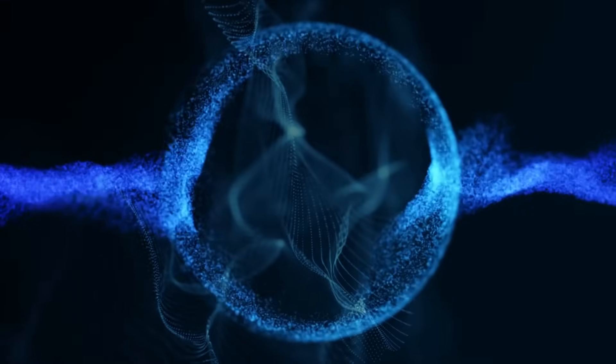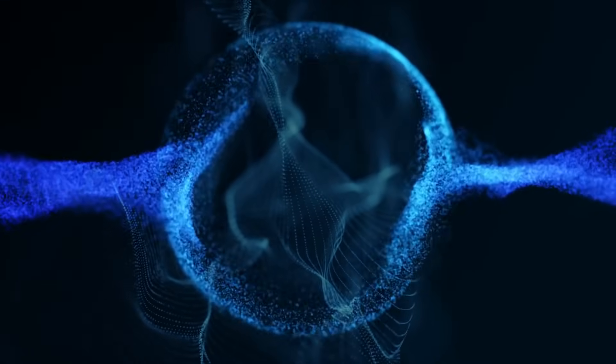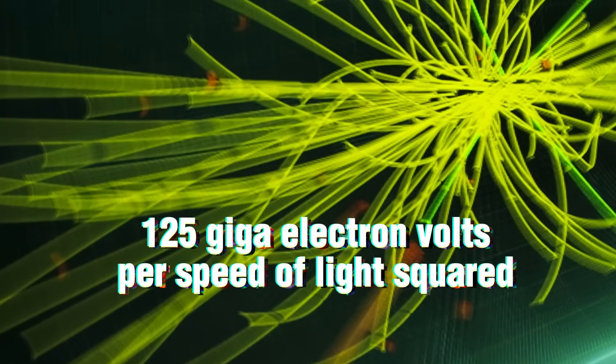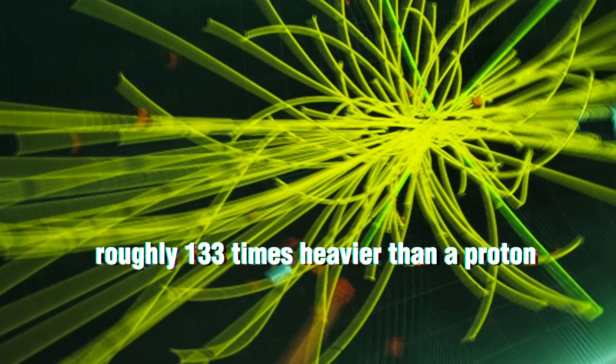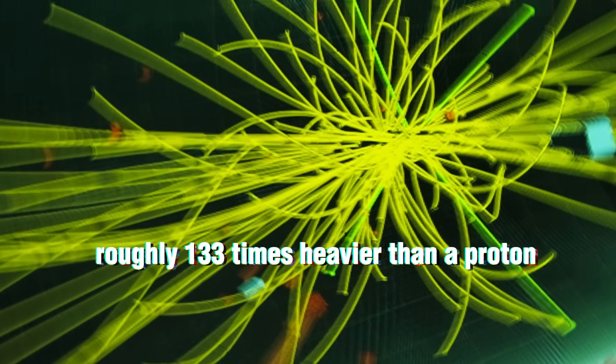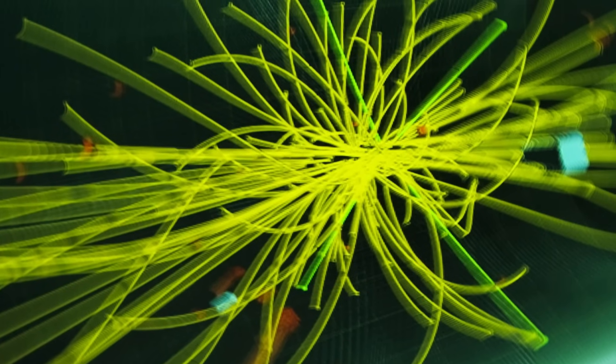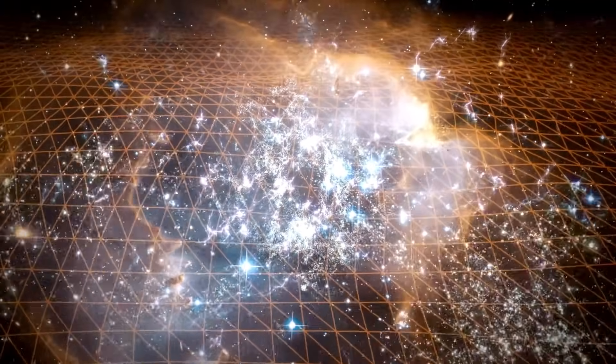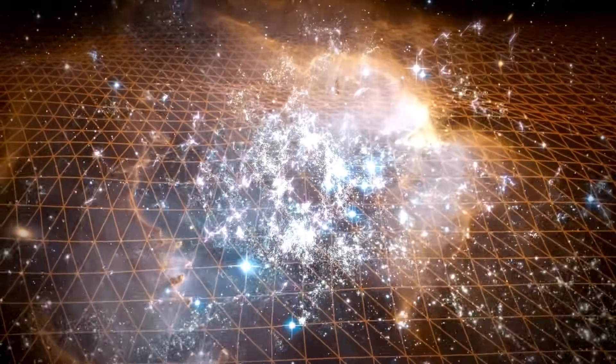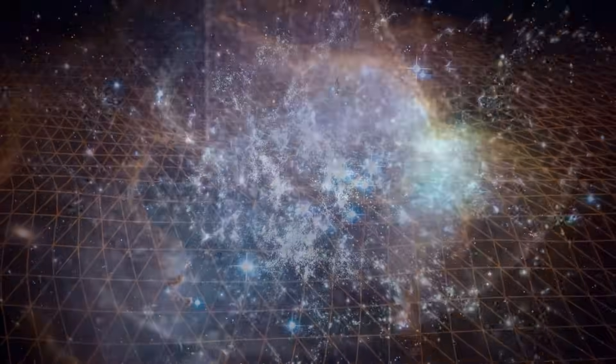It would enable us to learn more about the formation of matter. The Higgs boson, which has a mass of about 125 giga electron volts per speed of light squared, roughly 133 times heavier than a proton, is incredibly hefty in relation to other particles. The long-postulated Higgs field was confirmed to exist with the discovery of the Higgs boson, which is why it was so revolutionary. Particles receive mass when they interact with this field more, which naturally makes them heavier.